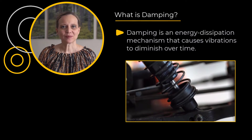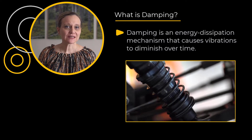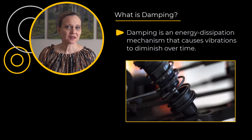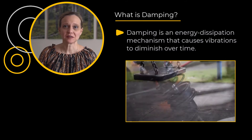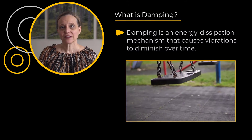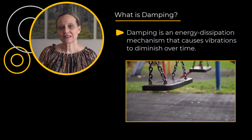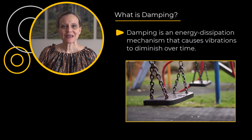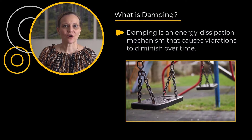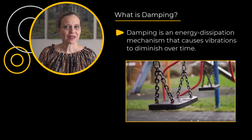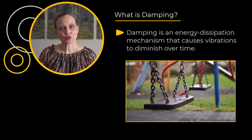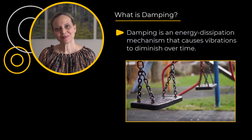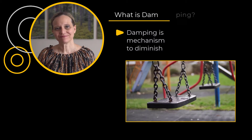Another example where we can see damping is the swings in the park. We can see that the motion of the swing is decaying because of the presence of damping at the joints and material as well.